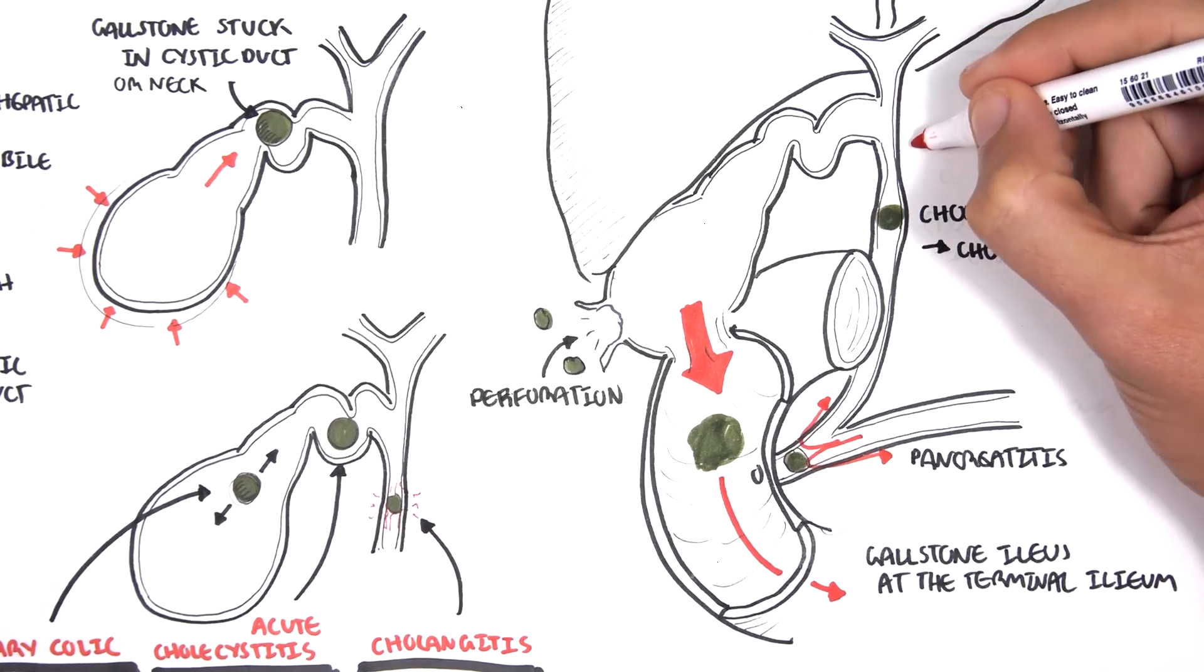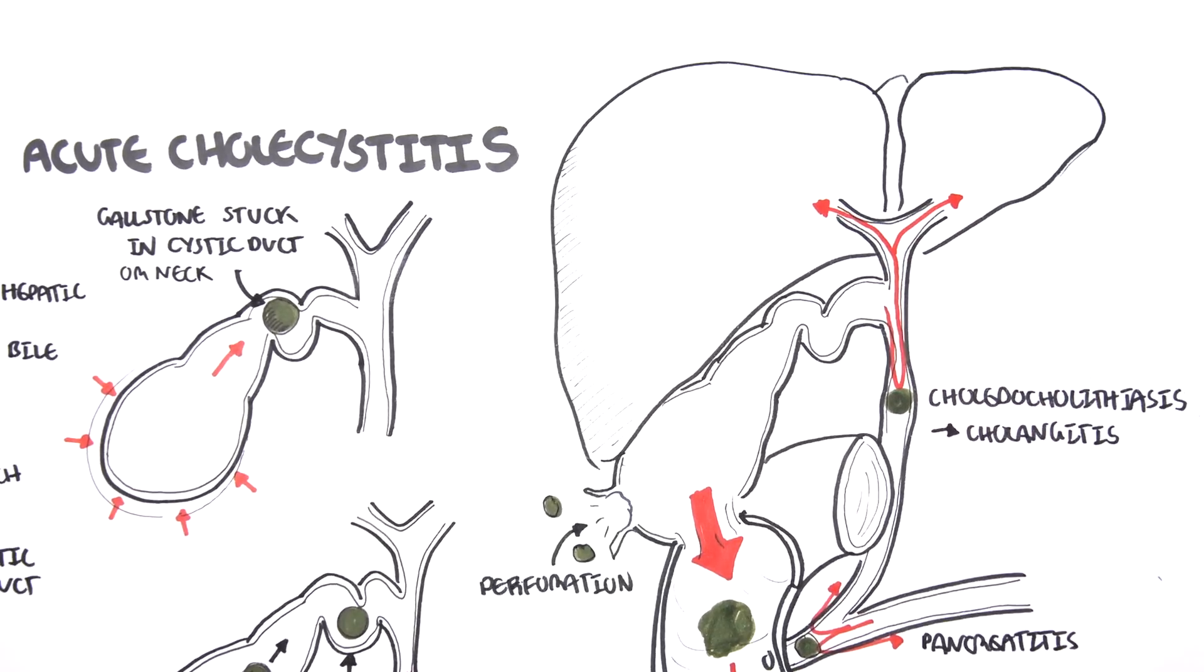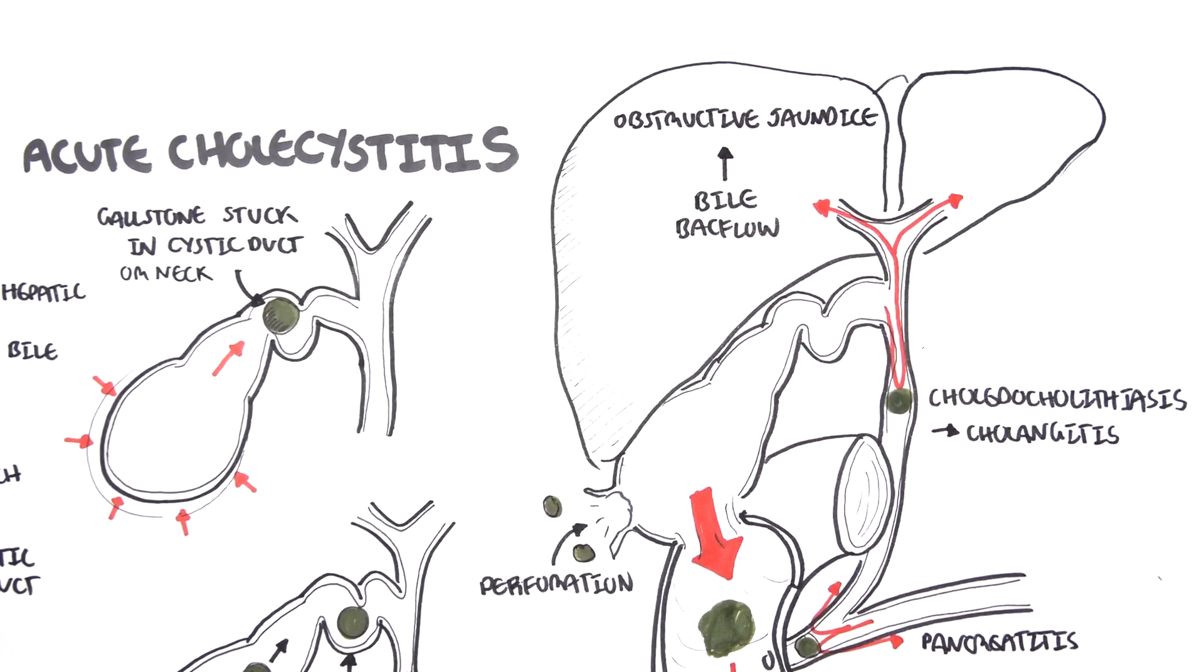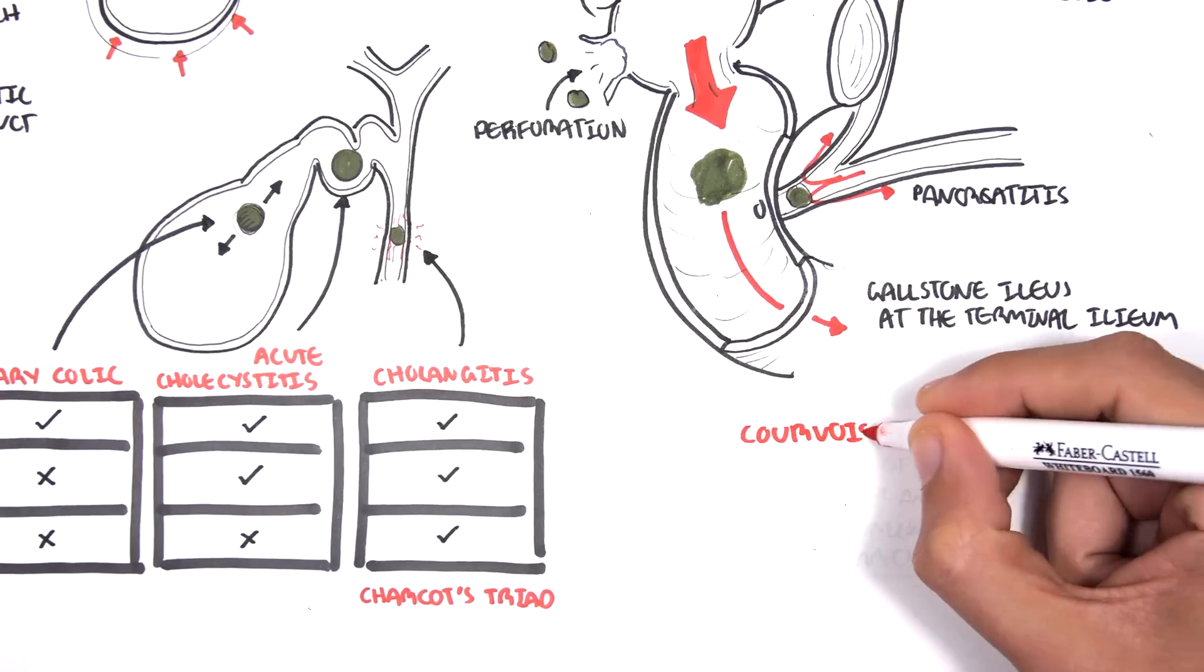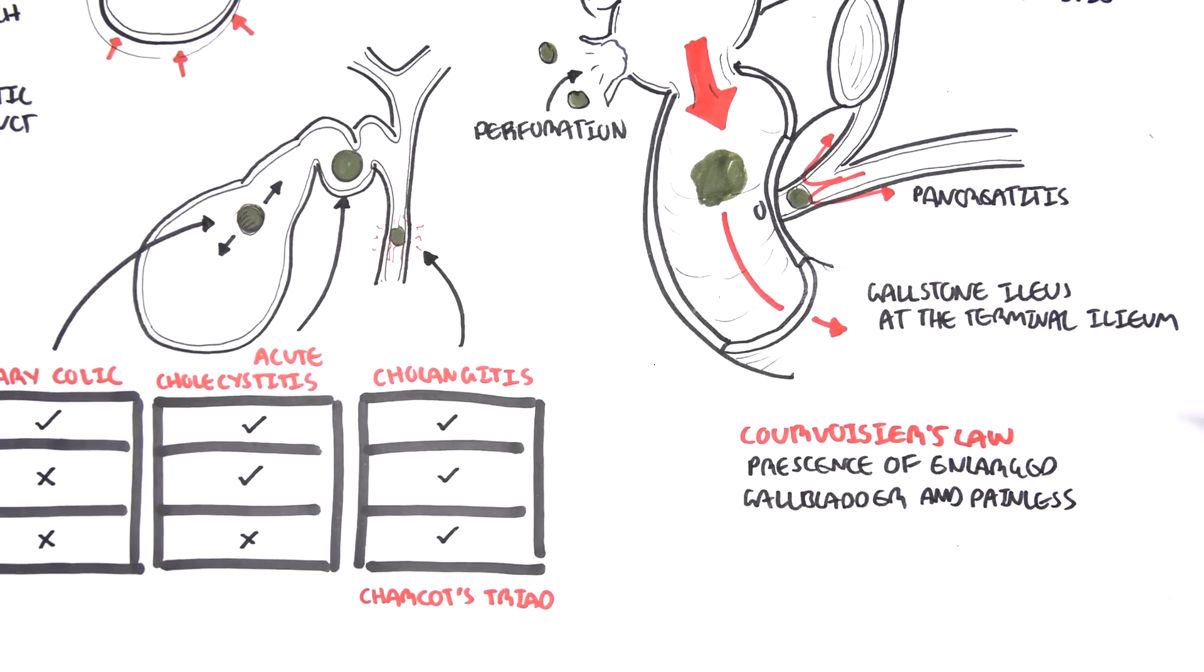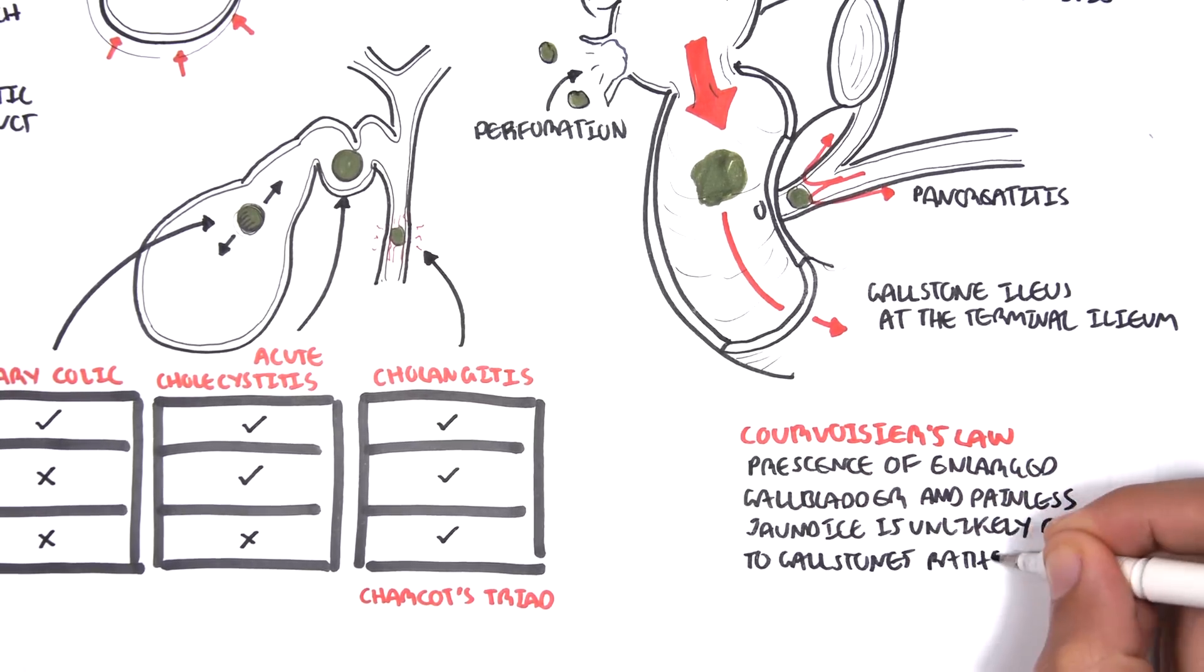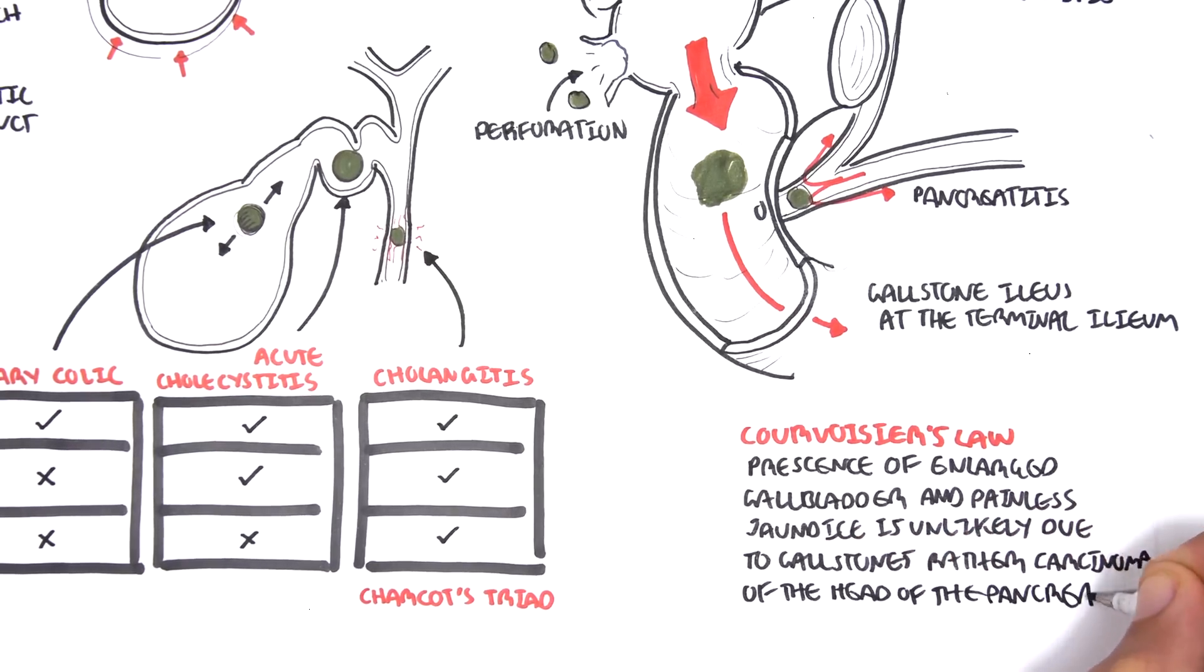Finally, obstruction at the common bile duct or above can cause backflow of bile to the liver. The bile backflow can lead to obstructive jaundice. On this side note, there's something called Courvoisier's Law. Courvoisier's Law essentially says that the presence of enlarged gallbladder with jaundice is unlikely due to gallstones, rather carcinoma of the head of the pancreas.